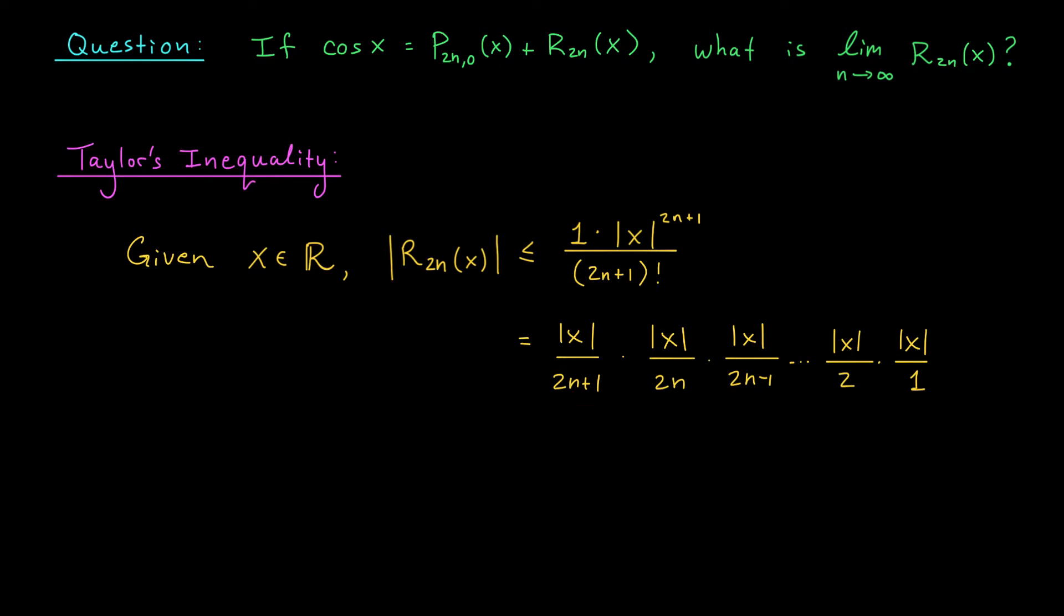We conclude that as n goes off to infinity, this upper bound on our error term is going to go to 0. Ah, well hold on. If the remainder in absolute value is bounded above by something heading to 0, that means that the remainder term itself is becoming smaller and smaller. It's going to 0 as well.